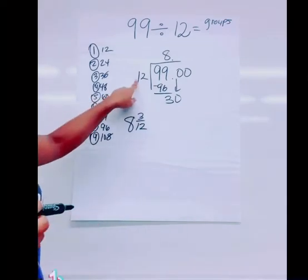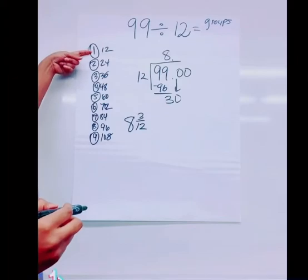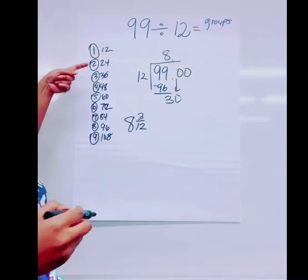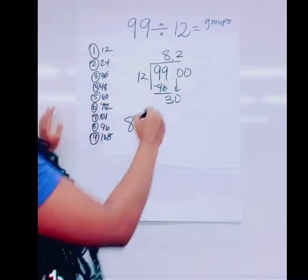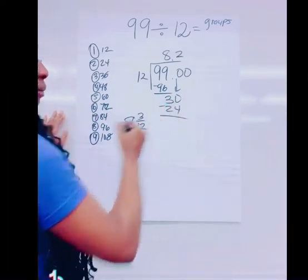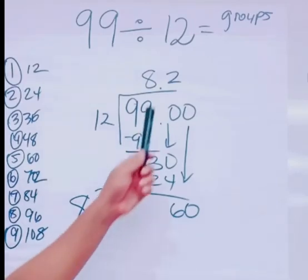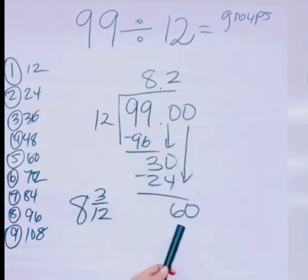So now I'm going to put 12 into 30. Come as close to 30 without going over. That's 2. If I pull 2 groups of 12 out of this, I'm pulling out 24, right? Subtract. You get 6. Bring down the next 0.